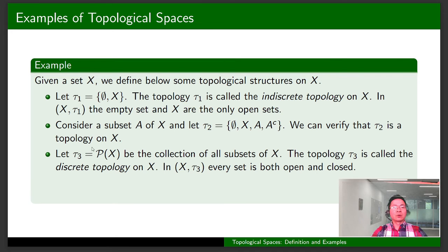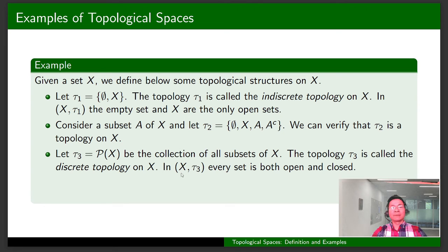In the third example, let τ₃ be the collection of all subsets of X, which means that τ₃ is the power set of X. It is obvious that τ₃ is a topology on X and it is called the discrete topology. In X with the discrete topology, every set is both open and closed.